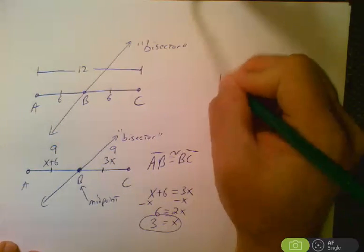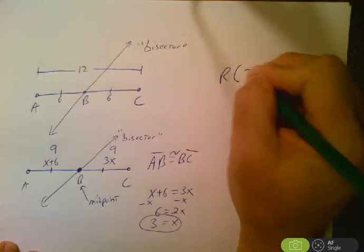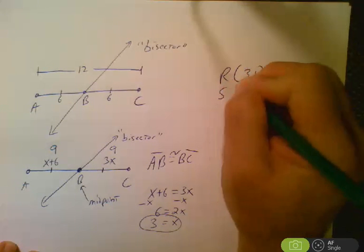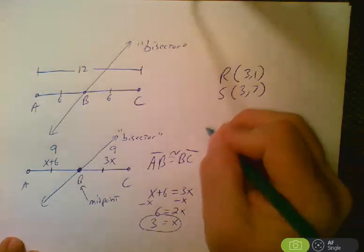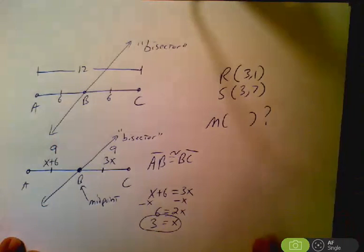let's say they give you a point R is at 3, 1 or something, and S is at 3, 7. Let's just use a couple there. And they want you to find the midpoint of that segment.